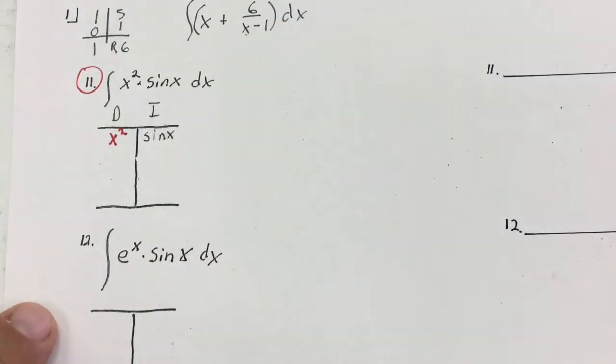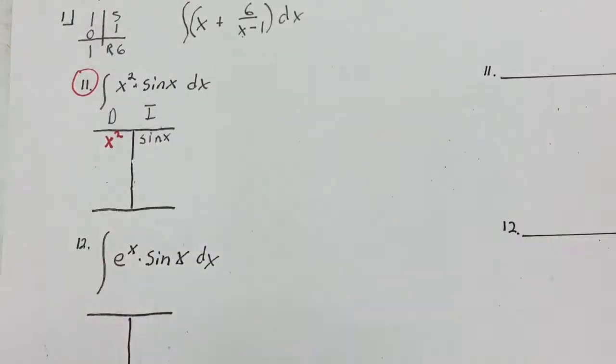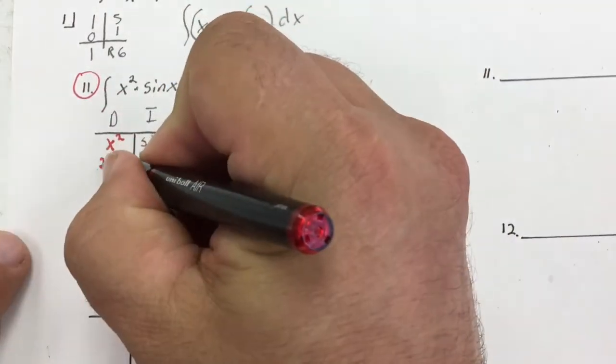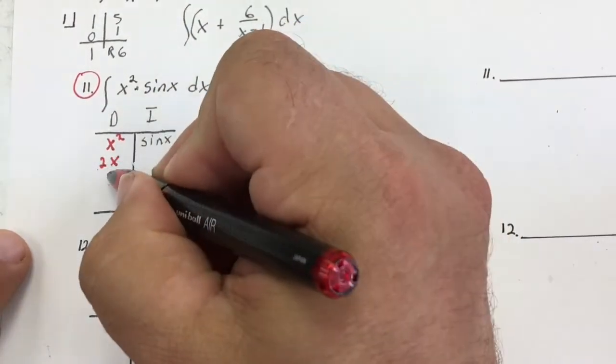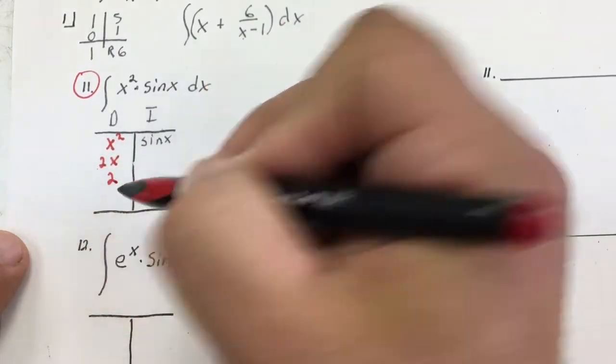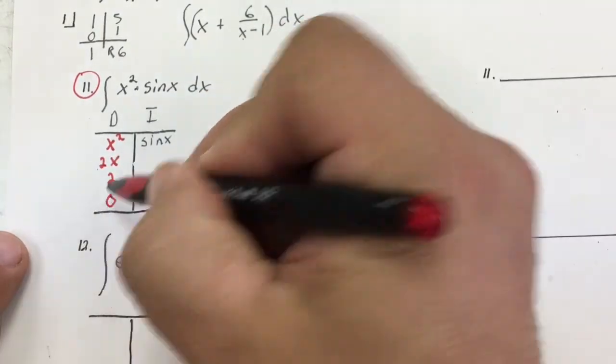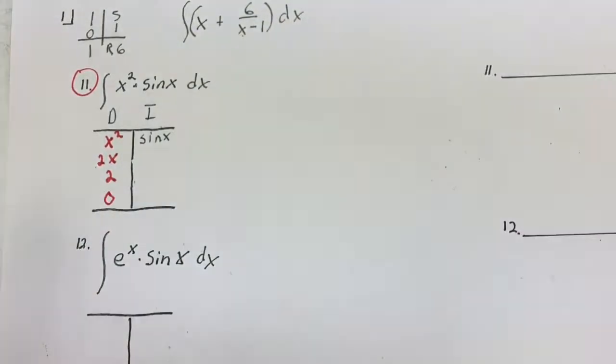So the integral of sin(x) and the derivative of x squared. The derivative of x squared is 2x. Now I'm going to take the derivative of that again, which is 2, and the derivative of 2 is 0. That's my stop — I'm going to stop there.